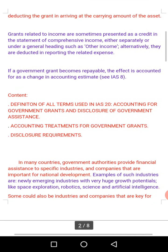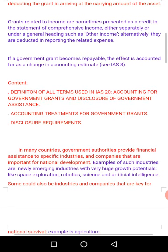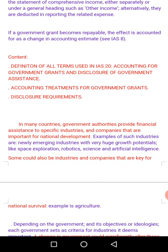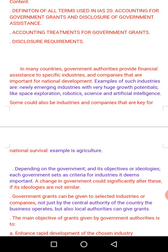In many countries, government authorities provide financial assistance to specific industries and companies important for national development. Examples of such industries are newly emerging industries with huge growth potential, like space exploration, robotics, science and artificial intelligence. Some could also be industries crucial for national survival — for example, agriculture. Depending on the government and its objectives or ideologies, each government sets criteria for industries it deems important.